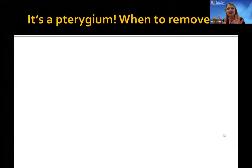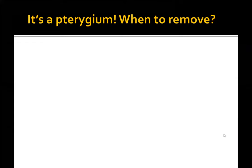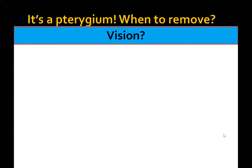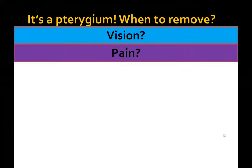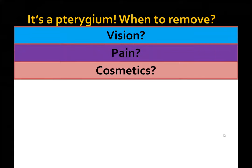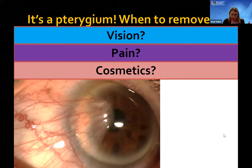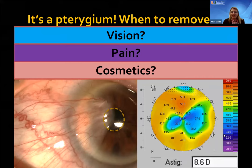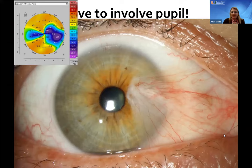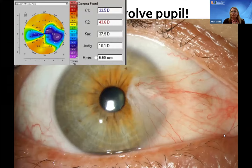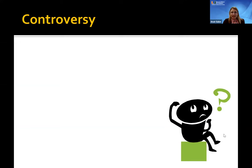Before assuming blood vessels on the cornea are pterygium, think broadly — SJS, ocular cicatricial pemphigoid, and other cicatrizing conditions need to be ruled out. When they are confirmed as pterygium, indications for removal include: affecting visual acuity, significant astigmatism, cosmetically bothersome to the patient, significant associated inflammation, or affecting the pupillary axis. A pterygium not entering the pupillary center can still cause 10 diopters of astigmatism, so location doesn't tell the whole story.